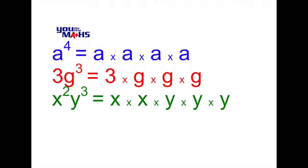Here we have x to the power 2, so we multiply x out twice, and y to the power 3, which means multiply out the y three times.